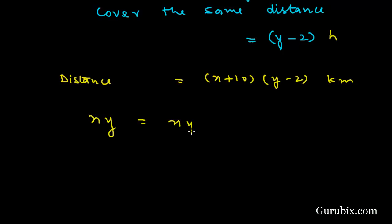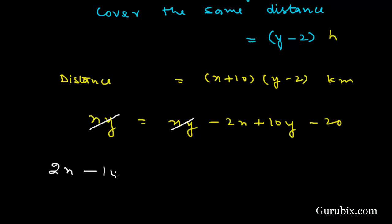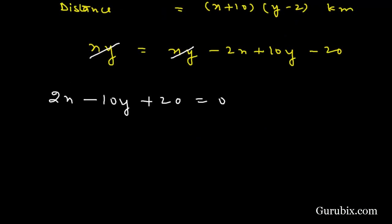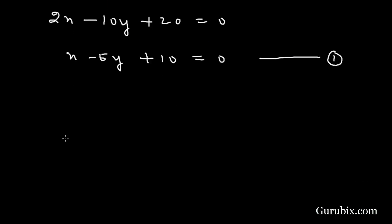Multiplying the two binomials, we have xy minus 2x plus 10y minus 20. We cancel out the xy terms, giving us 2x minus 10y plus 20 equals 0. Dividing both sides by 2, we get x minus 5y plus 10 equals 0. This is Equation 1.